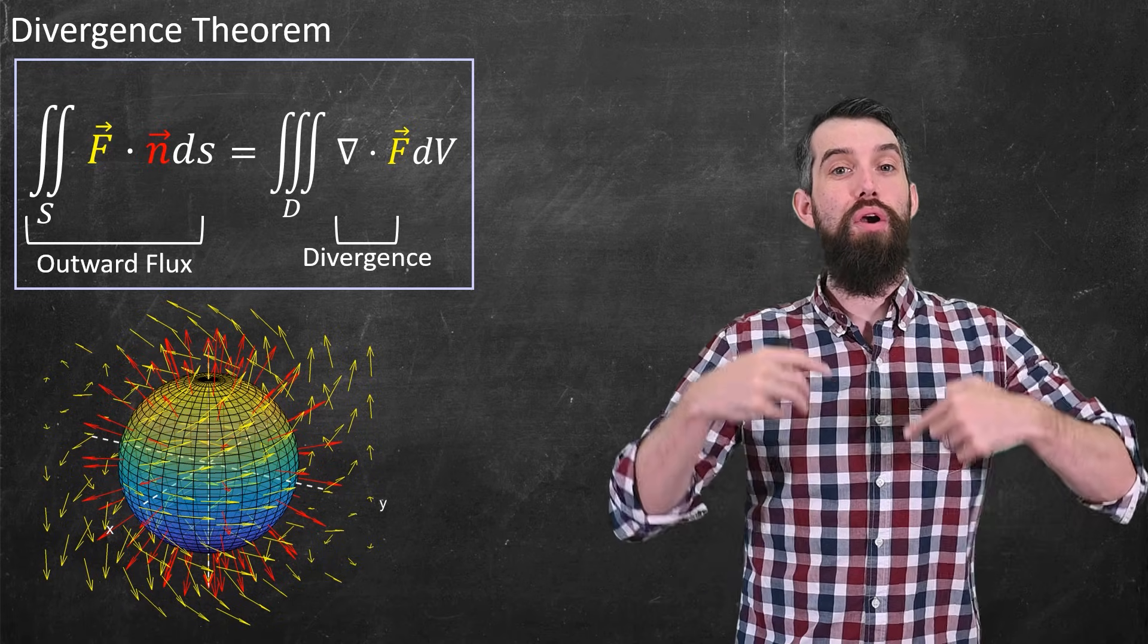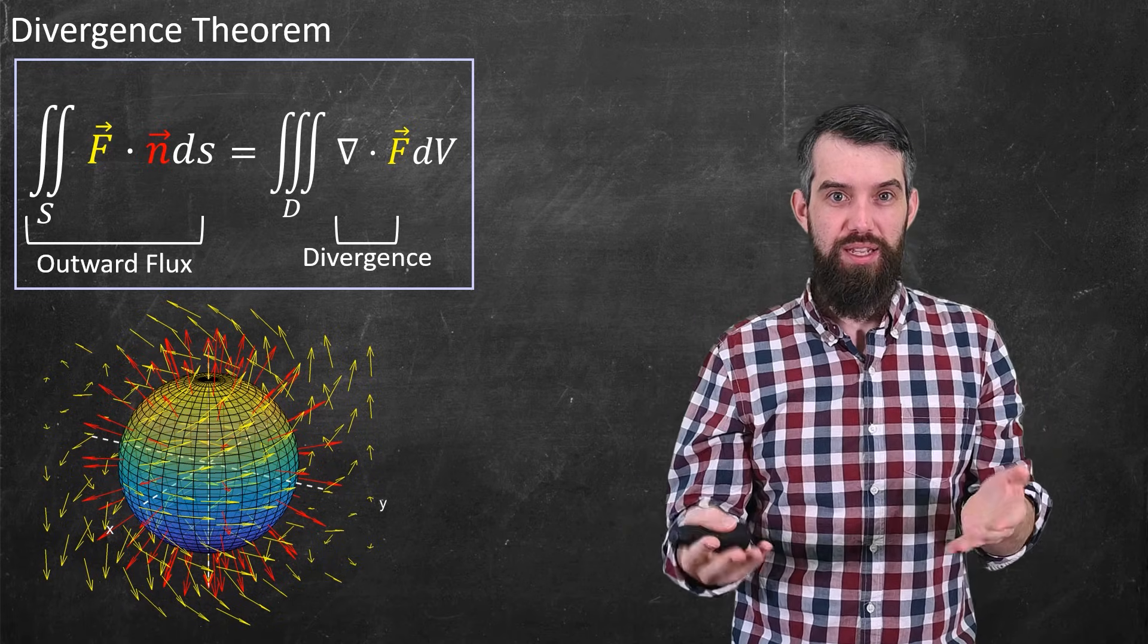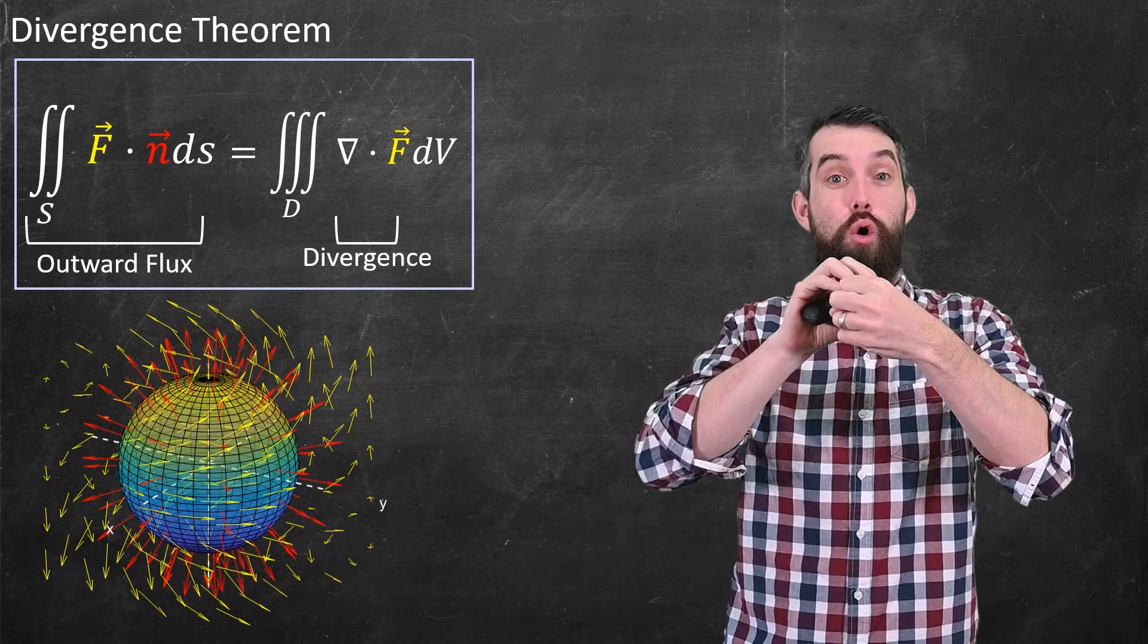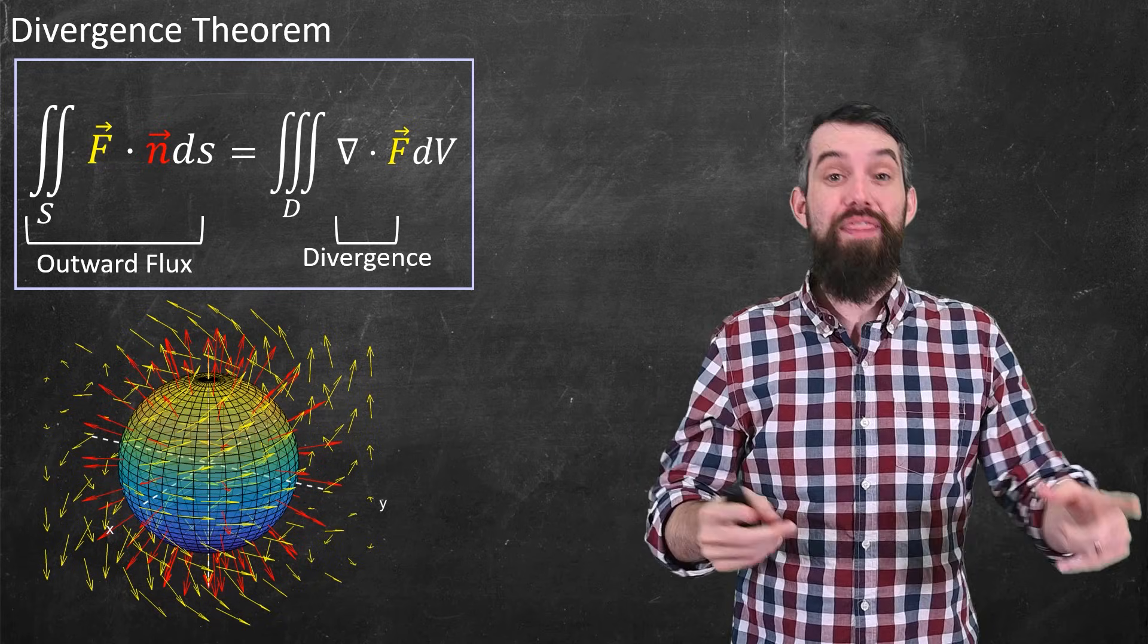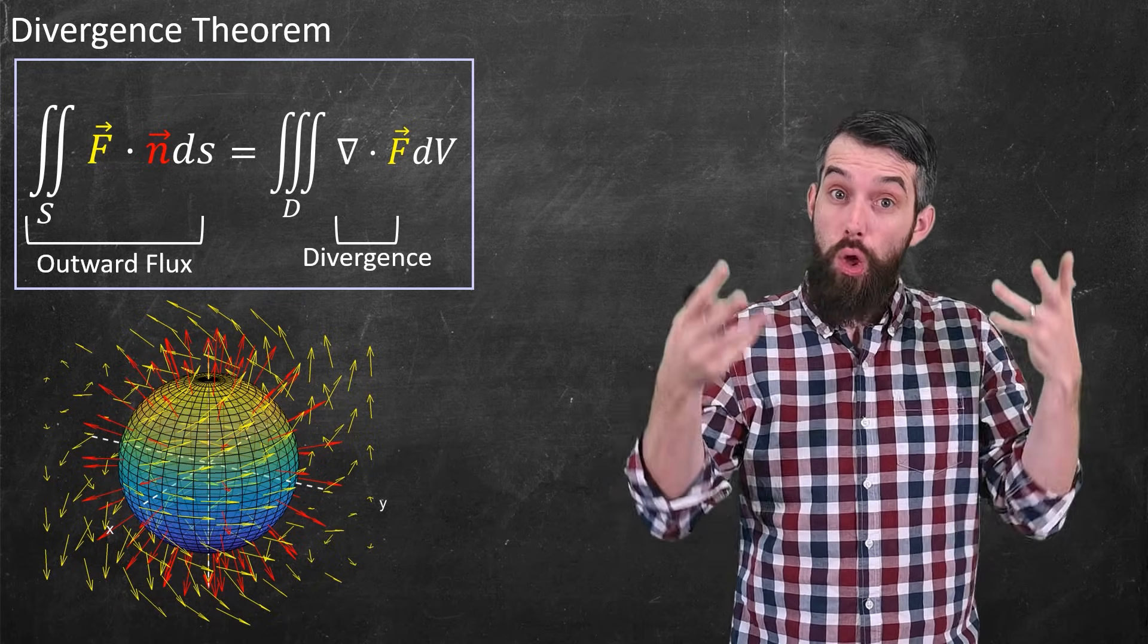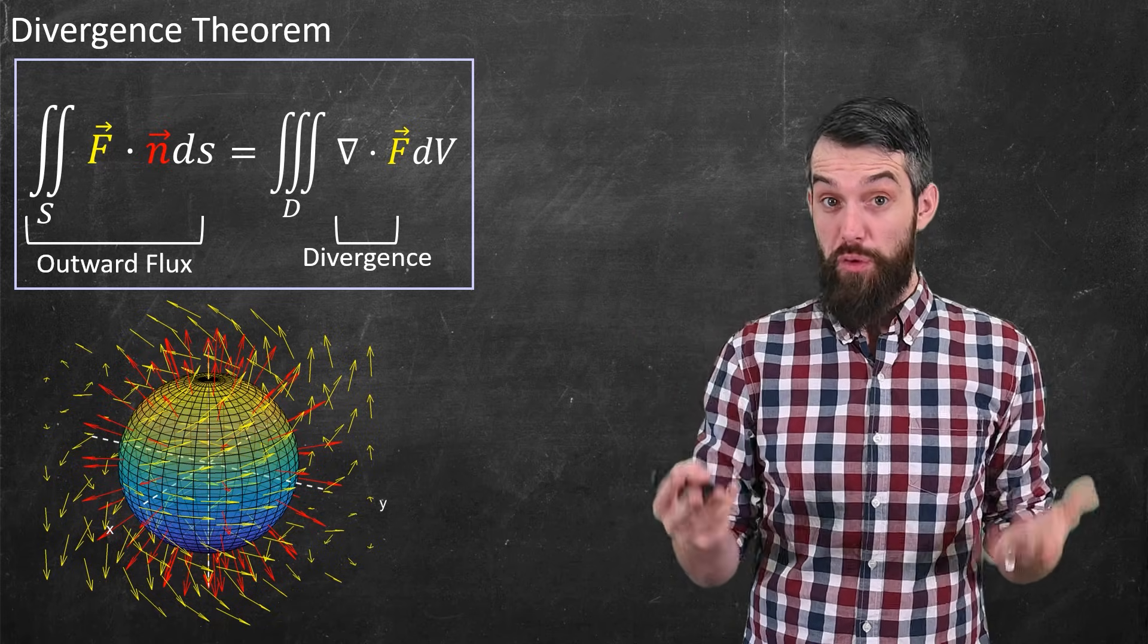The red vectors are normal to the surface. So you have your surface, this has a whole bunch of normals at every point, and then that whole thing lives within the yellow vector field.